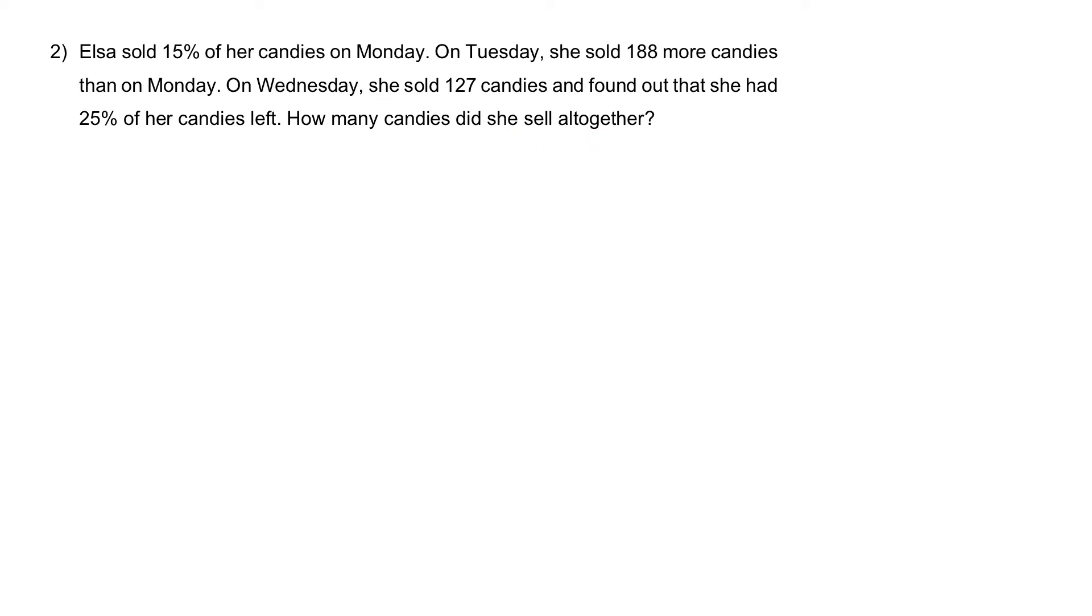Let's change all the percentage to fraction. 15%, which is 15 out of 100. And if we simplify, we will get 3 out of 20. And what about 25%? 25 out of 100, which is a quarter in its simplest form. But I'm going to change it to 5 out of 20 instead. Take note that I'm trying to change to a common denominator, which is 20.